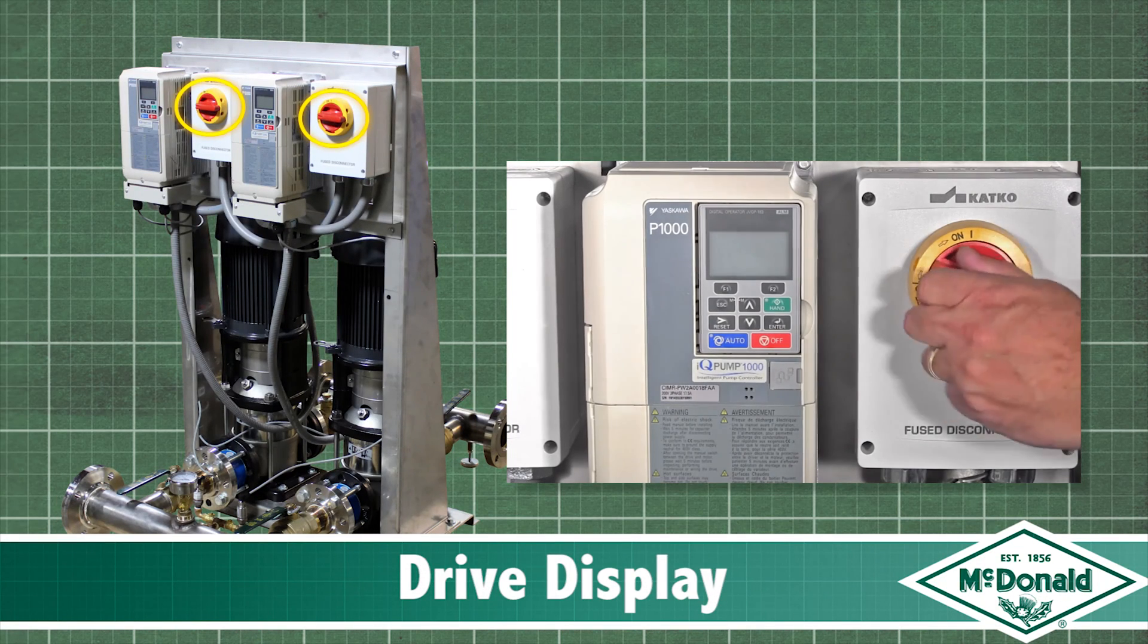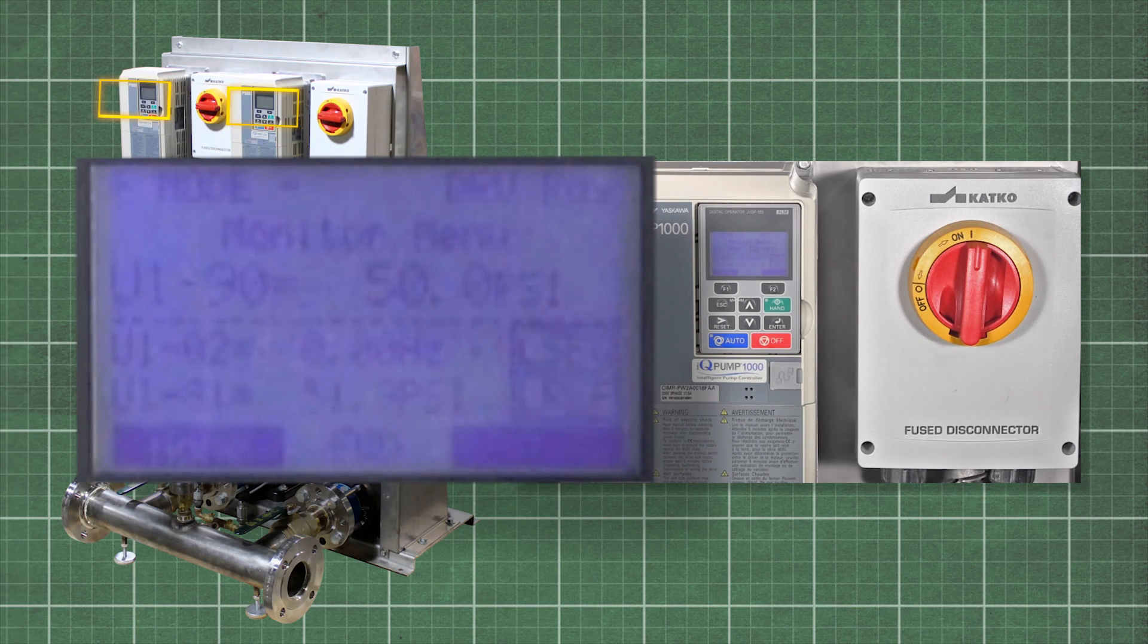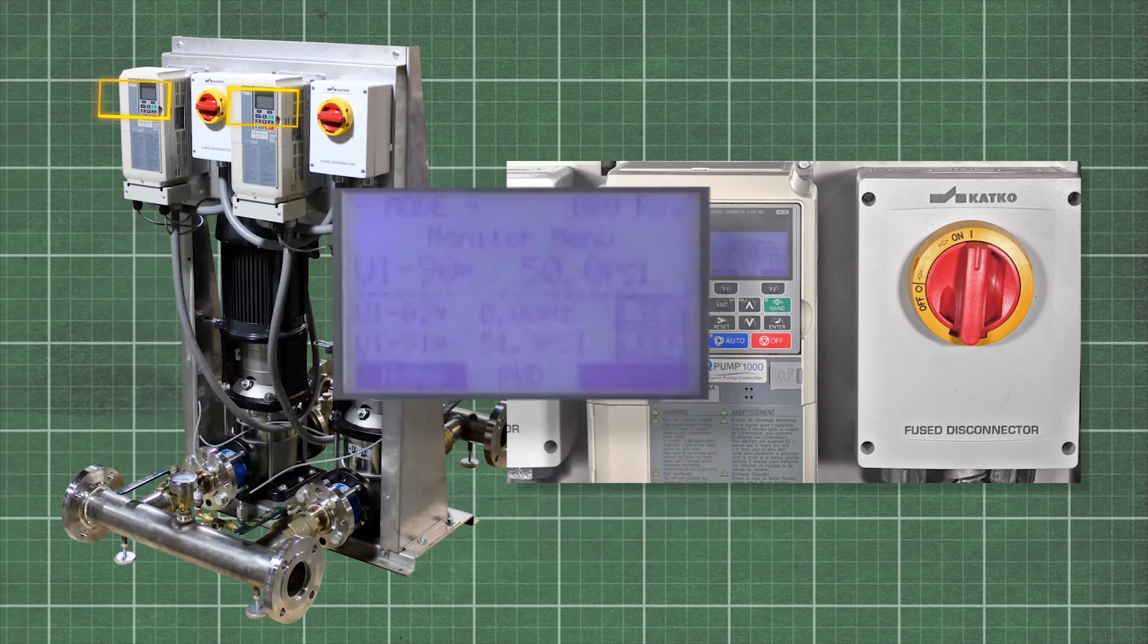Drive display. Turn on the power on the disconnect box. The drive should boot up. The screen should be displaying the operation menu as shown.